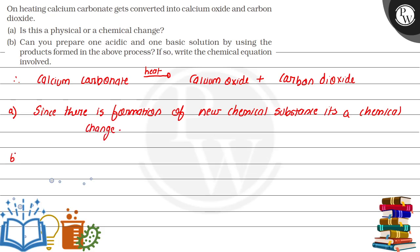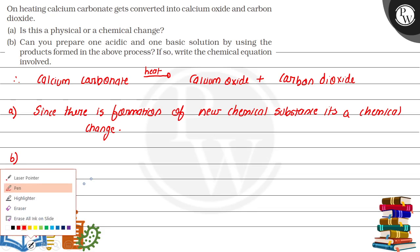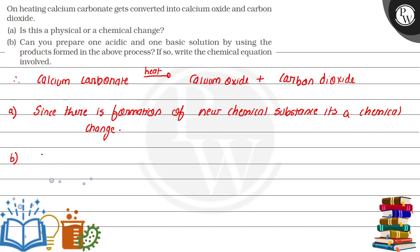And in part B, it is saying can you prepare one acidic and one basic solution by using the products formed in the above reaction? If so, write the chemical equation. So what we will do is, first we will prepare one acidic and one basic.